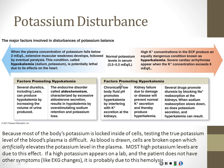Hyperkalemia comes up much more often than hypokalemia, with the exception of the diuretic effect. What causes hyperkalemia? Acidosis can, just as we talked about, and acidosis is very common. Kidney failure is another major cause — patients on dialysis have their potassium go up and up, come down with dialysis, then go up again repeatedly. Finally, certain medications that work on the kidney can reduce potassium excretion and cause potassium levels to rise — the opposite of Lasix.